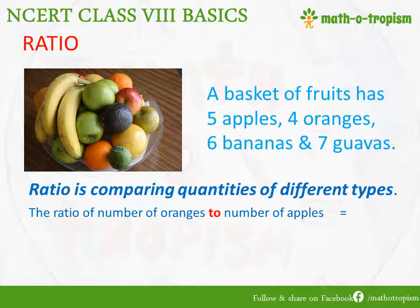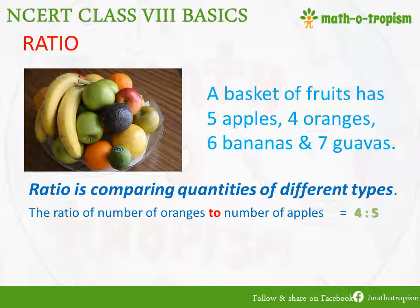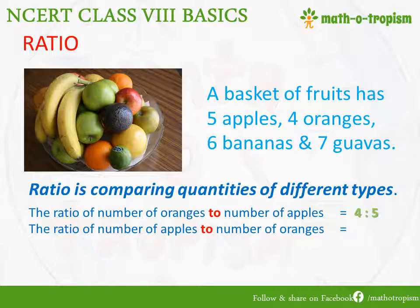Whatever is asked first will be written first and what is asked after will be written later. So the number of oranges is the first one. There are 4 oranges in the basket. We write it as 4, and for the ratio we represent it by two dots — a colon. So we put the colon and then the number of apples, which is 5. So 4 is to 5. The colon is read as 'is to'. Similarly, the ratio of number of apples to the number of oranges is just the opposite: 5 is to 4.